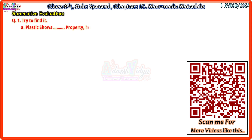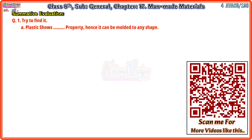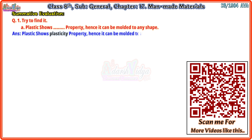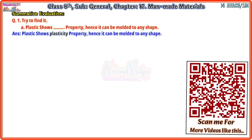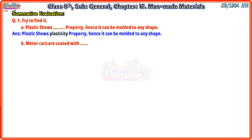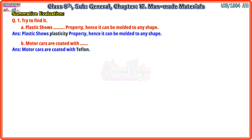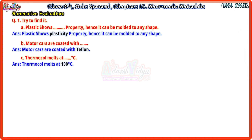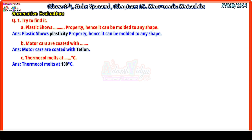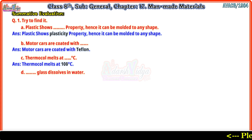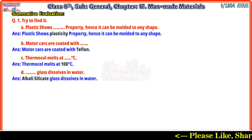Now let's see the summative evaluation exercises. Question 1 - Try to find it. First: Plastic shows plasticity property, hence it can be molded to any shape. Second: Motor cars are coated with Teflon. Third: Thermocol melts at 100 degrees Celsius. Last: Alkali silicate glass dissolves in water.